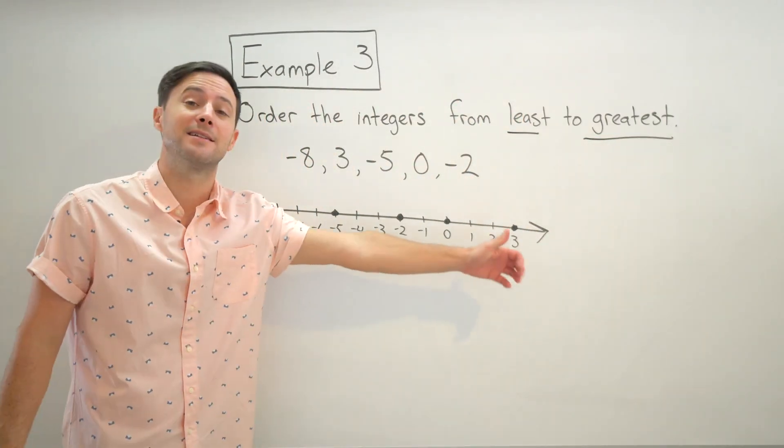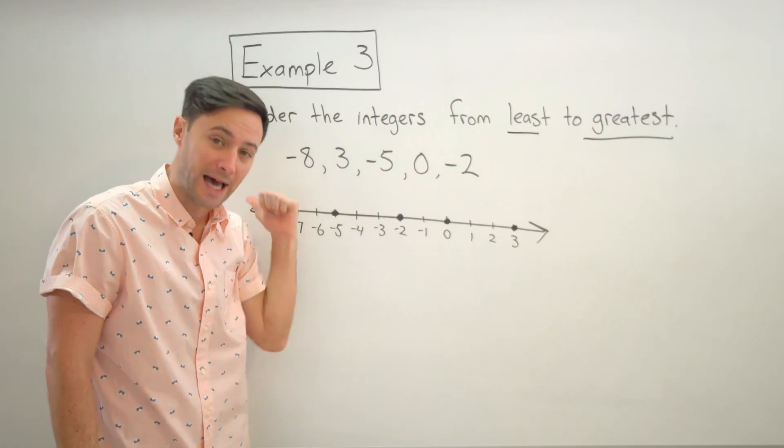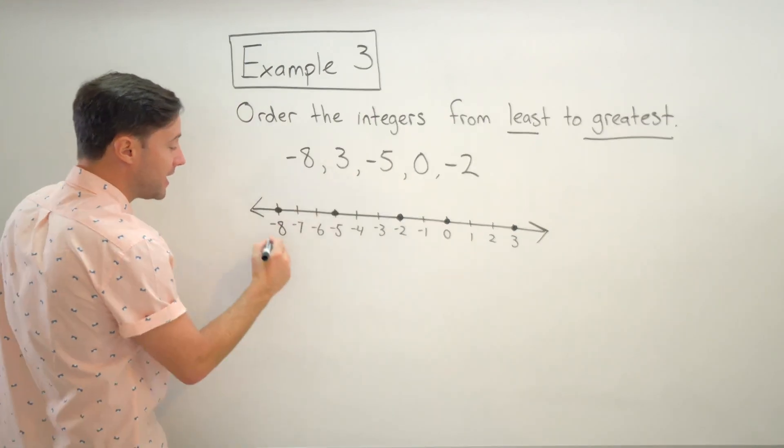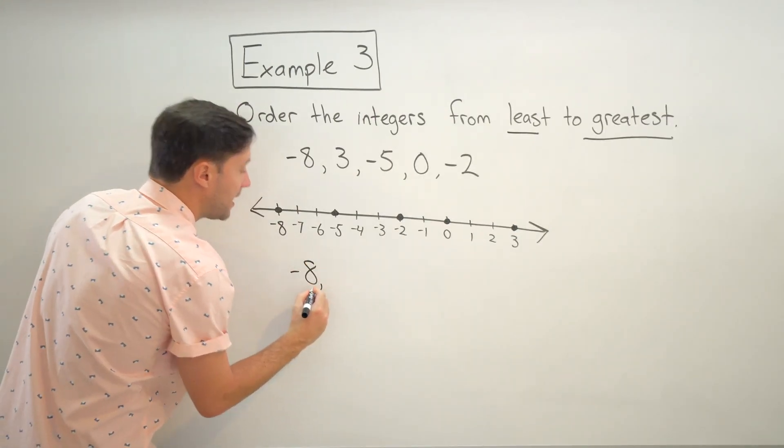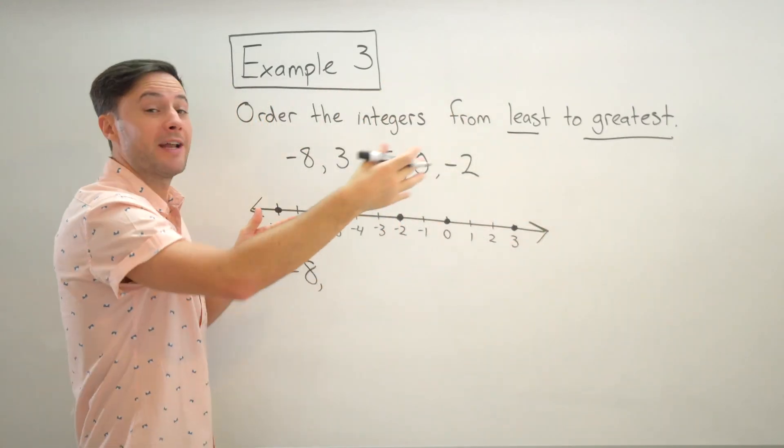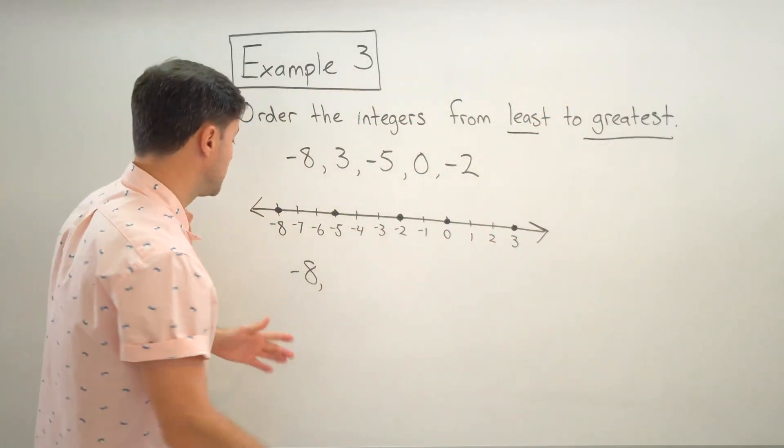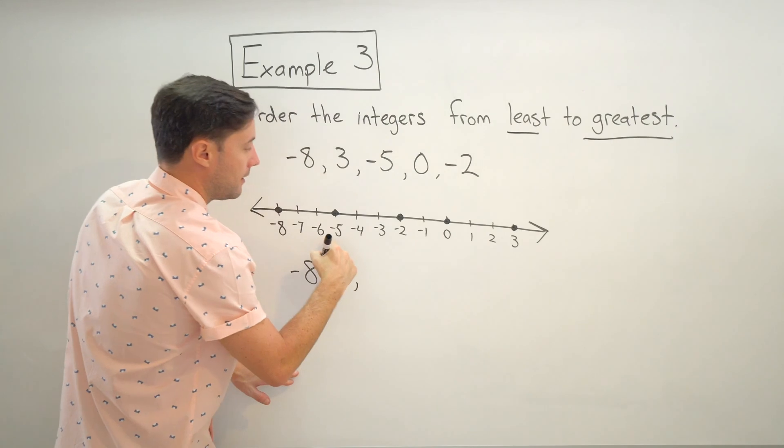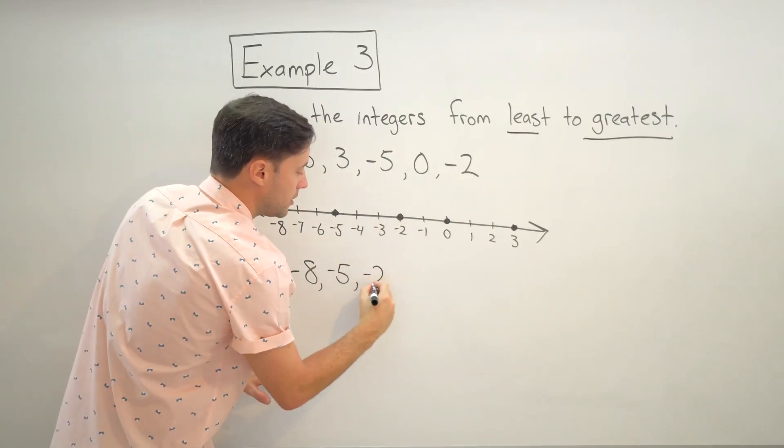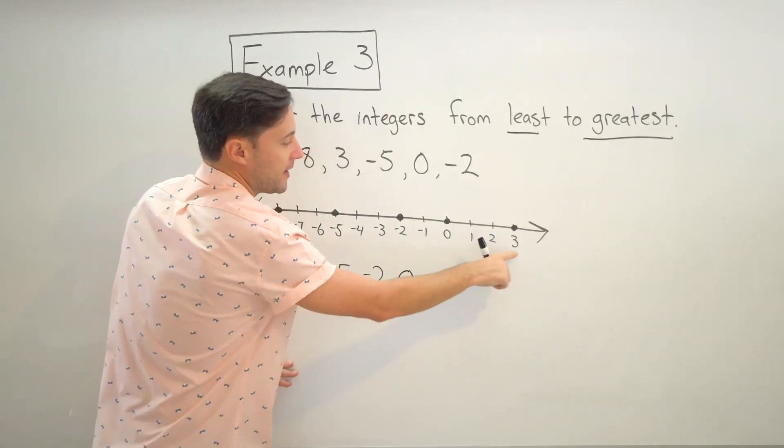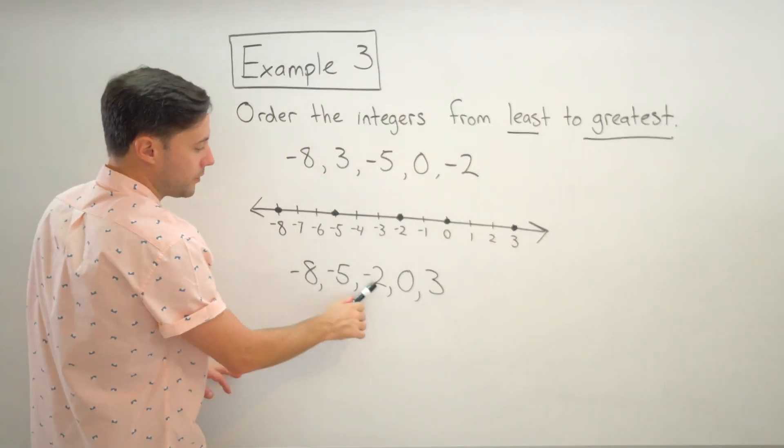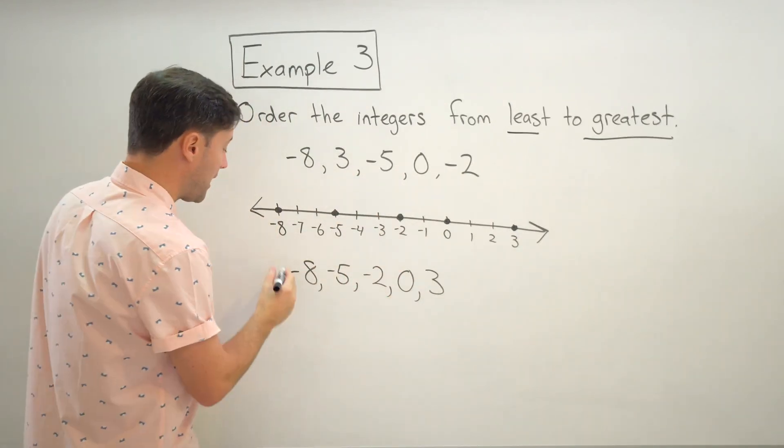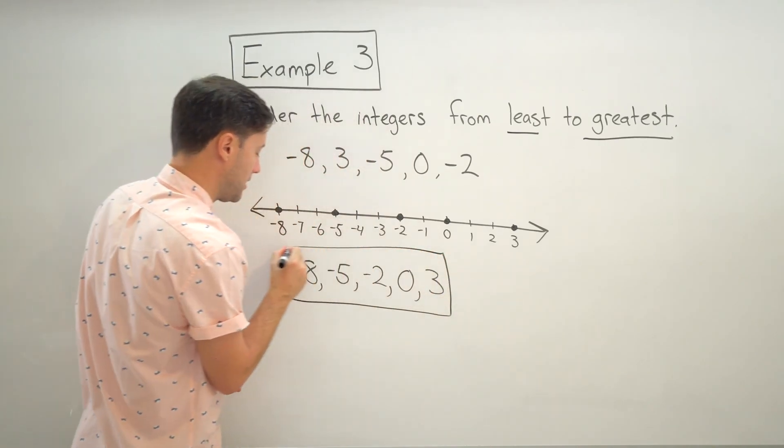So my least is going to be whatever is farthest to the left on the number line. Remember, the values decrease as we move to the left. So negative eight then would be my least. And now as I'm moving to the right, the values are increasing until we get to the greatest. So just move along my number line. Negative five would be next. Then negative two. Then zero. And finally, three is the greatest. Always double check to make sure you didn't miss any numbers. And box your answer.